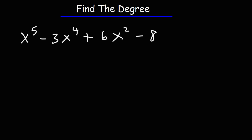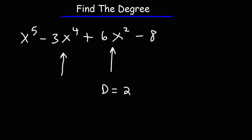The degree is going to be equivalent to the monomial with the highest degree. You can find it by looking at the exponent of the variable. The monomial 6x squared has a degree of 2. The monomial negative 3x to the fourth has a degree of 4.